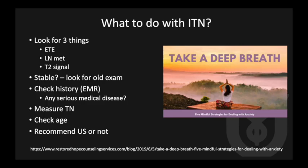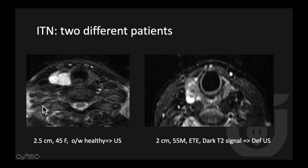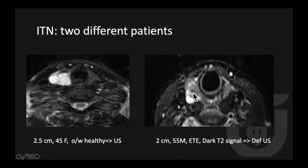An example: a 2.5 cm thyroid nodule in a 45-year-old healthy woman that appears T2 bright (likely benign) still meets criteria for ultrasound. A 2 cm nodule with extrathyroidal extension and T2 darkness is suspicious for thyroid cancer and warrants urgent ultrasound. On CT, a patient with a history of ovarian cancer and bilateral hypodense thyroid nodules without extrathyroidal extension — this can be mentioned in the body of the report without recommending ultrasound. However, a trauma patient with multiple cystic lymph nodes, a poorly defined thyroid nodule with punctated density, and extrathyroidal extension invading the strap muscle: this is papillary thyroid cancer until proven otherwise.